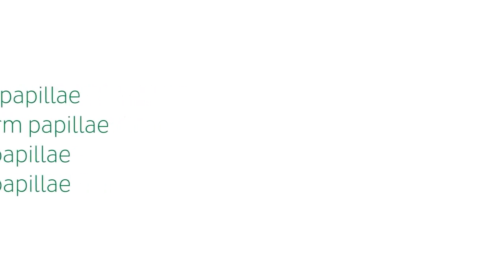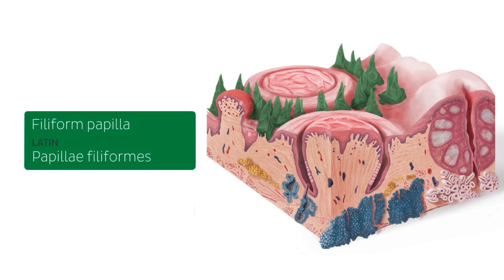We're going to have a closer look at the filiform papillae by looking at this microscopic image of the tongue. The filiform papillae are these cone-shaped projections here, but they can also take a cylindrical shape. They cover most of the pre-sulcal area of the dorsum of the tongue and are the most numerous of the lingual papillae. The main function of the filiform papillae is to increase the friction between food and the tongue and facilitate movement of particles by the tongue. These papillae don't contain taste buds, therefore they don't participate in taste perception.